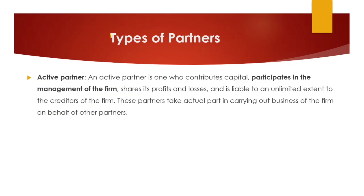Now let us look into the types of partners — different types based on how actively they participate in management and how they perform business activities. The first is the active partner. As the name suggests, an active partner contributes capital and participates in the management of the firm. He shares in profits and losses, and his liability is unlimited to the extent of the firm's creditors.